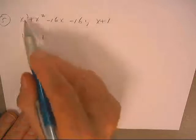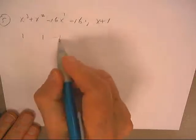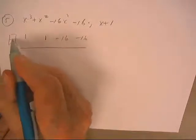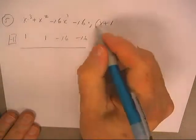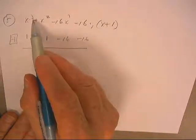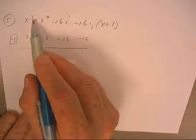So we'll use, let's see, three, two, one constant, we'll use synthetic division. We'll put negative one in the box because that's one of the three factors. This tells me there probably is three factors.